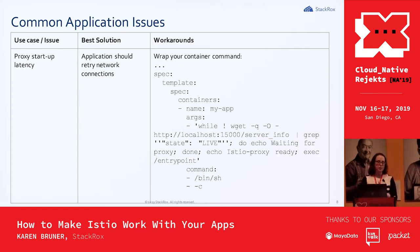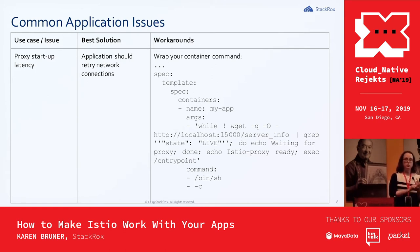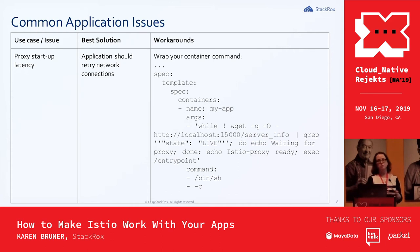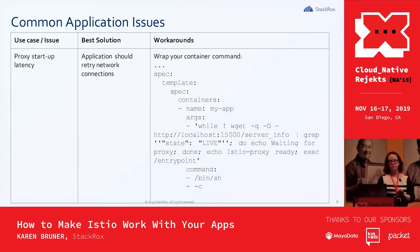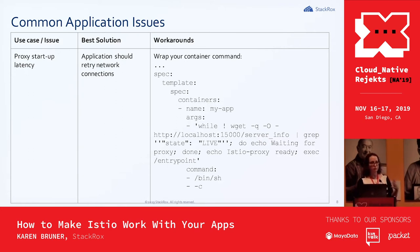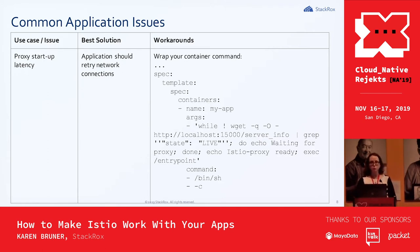The best solutions assume you have full control over the application source and can modify it as needed — not some third-party or legacy app that no one wants to touch. Workarounds are viable and sometimes reduce security or add management overhead, but they get things working until you can make downstream application modifications or until Istio improves support for these corner cases.